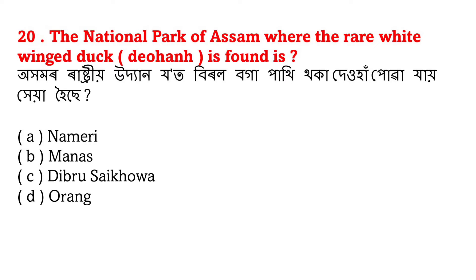Question number 20: The national park of Assam where the rare white-winged duck is found. Ahamor rajdhahattro too hobo A - Nameri Rastiyoddan (Nameri National Park). Nameri Rastiyoddanat deo khah (white-winged duck) pwa jaya.